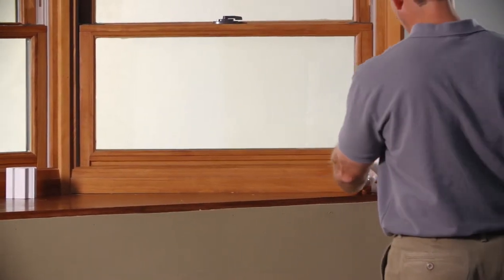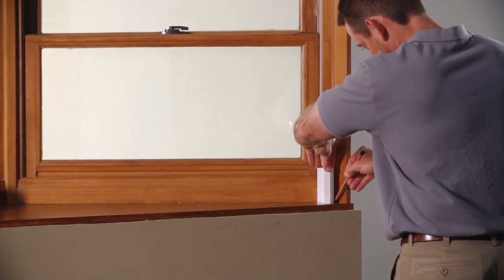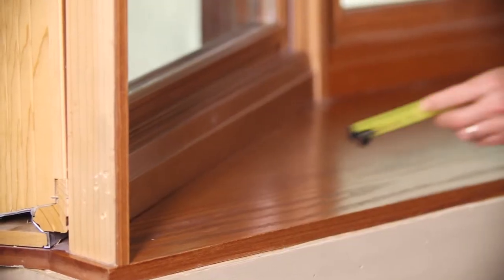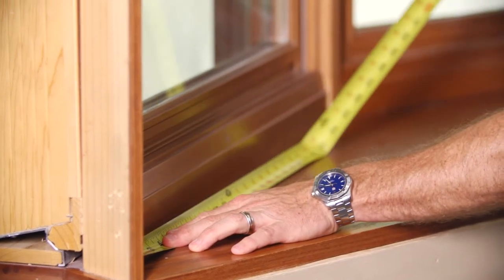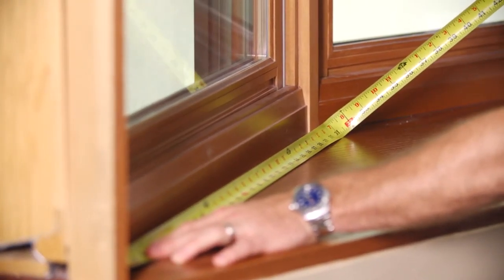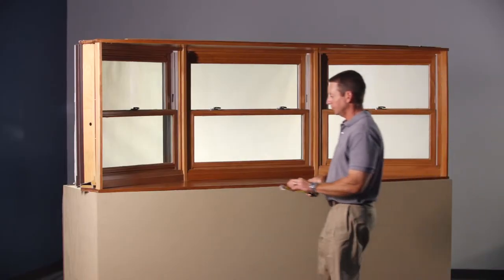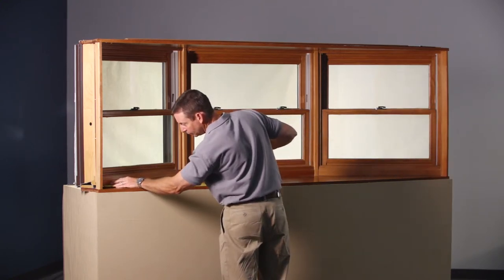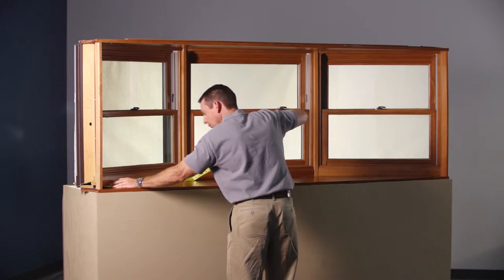It's critical to know your width measure reference points when measuring for the left and right units of the three-sided bay. For direct mount, hang strip, and Z frame, measure from the inner edge of window to the exact center of face of the bay post. For L frame and Deco frame, measure from outside edge of the outer frame to the center of the face of the bay post.